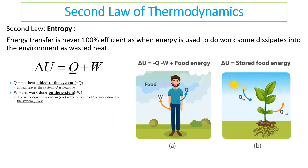We can apply the second law to food chains. Food chains only have a certain number of trophic levels because energy transfer is never 100% efficient — we always lose some energy as heat.